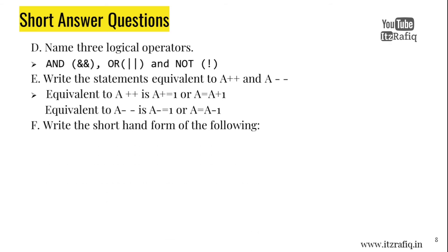F. Write the shorthand form of the following: a equal a plus fifteen, b equal b plus one. Shorthand form of a plus fifteen is a plus equal fifteen and b equal b plus one is b plus equal one.